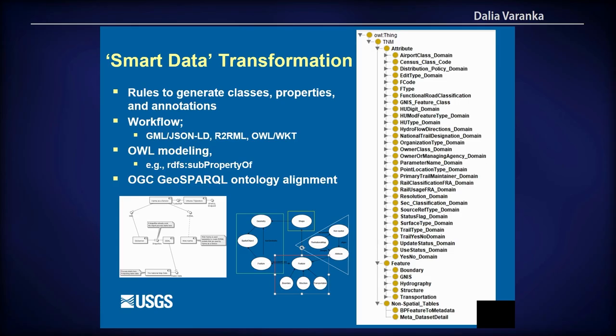We implemented a bottom-up approach for the capture of schema and feature instance data from existing sources. The workflow to populate the triple store begins with Esri shapefiles converted to Geography Markup Language and then to Web Ontology Language using Karma to design the RDB-to-RDF mapping language schemas.